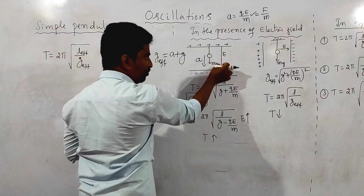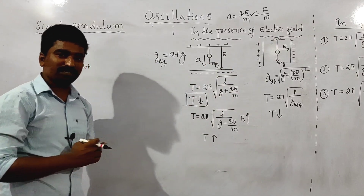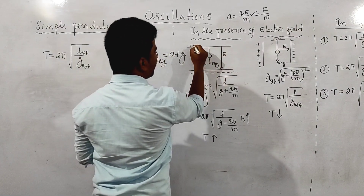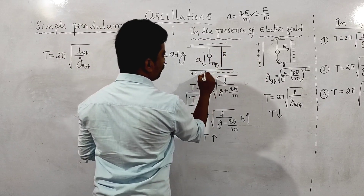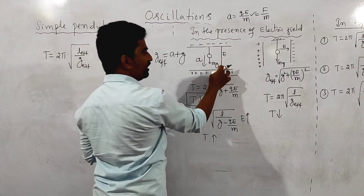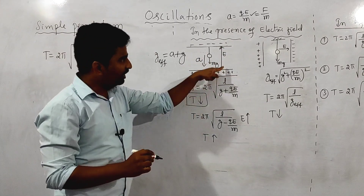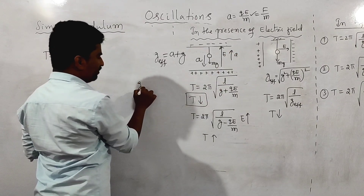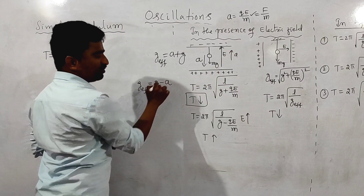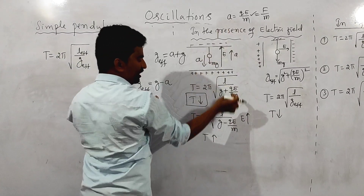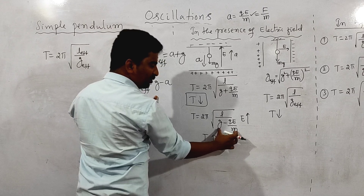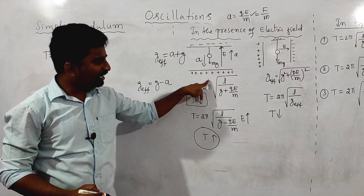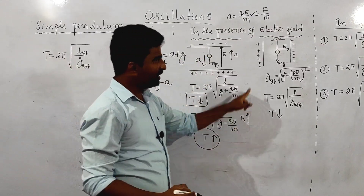When the electric field is downward, the time period decreases. When the electric field is upward, the acceleration is upward, so G_eff = G − A = G − QE/M. The effective G decreases, so the time period increases.